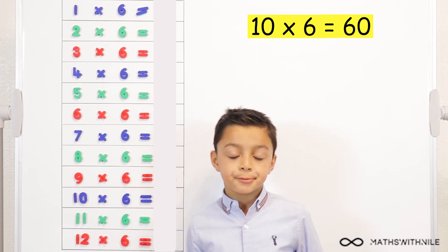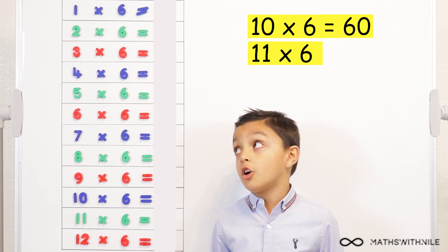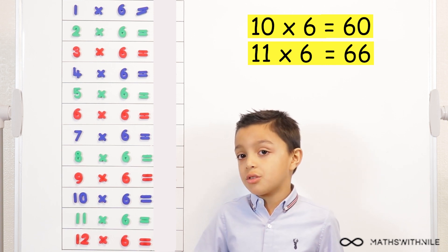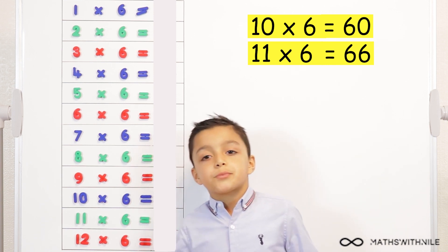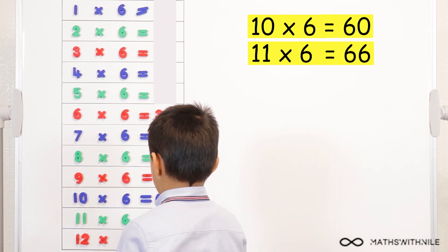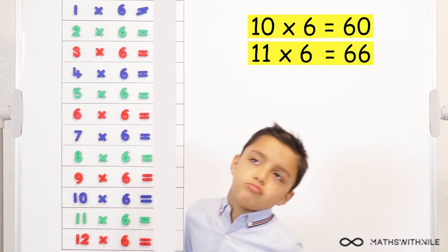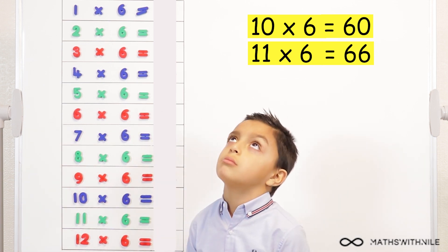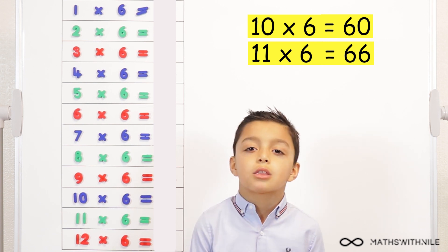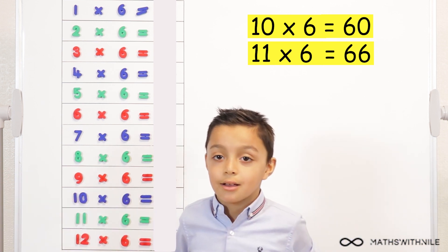So, if somebody asked you, what is eleven times six? Uh, sixty-six, because eleven times table is always double digits. Okay, but how can you use the answer for ten times six to help you? Um. To find eleven times six. Sixty, so you could just add on six, if you know that's the answer. Very good.